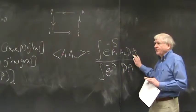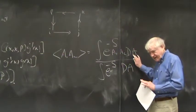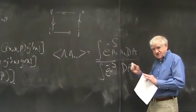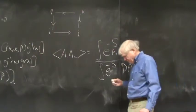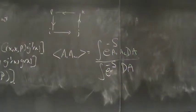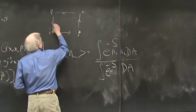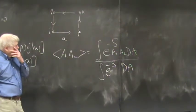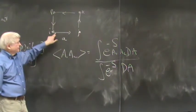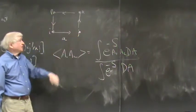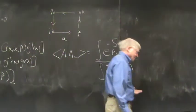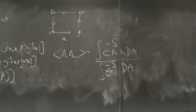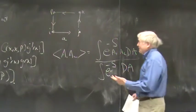Instead of integrating over A(x) for every space-time point x, we put space-time on a lattice and integrate over the vertices. That was how people did lattice gauge theory before Wilson. Wilson said, because of gauge theories, let's focus not just on the vertices of the lattice but also on the links between vertices. The lattice has spacing A. These little squares formed by links are for some reason called not 'little squares' but 'plaquettes' — using the French word for little square.